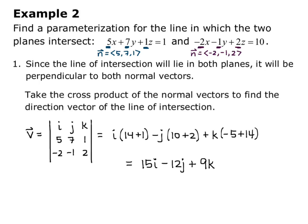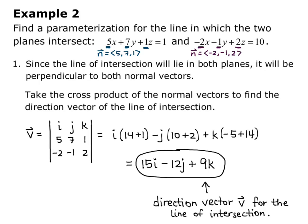So this gives us the vector 15i - 12j + 9k. So that is our direction vector v for the line of intersection.